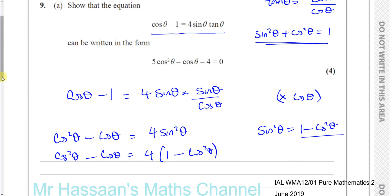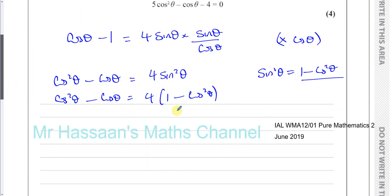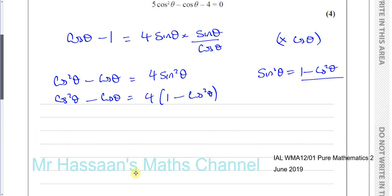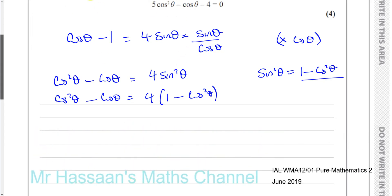So I'm going to have 4 times 1 minus cosine squared theta. Now if I expand that bracket and simplify, hopefully I should get what I need.